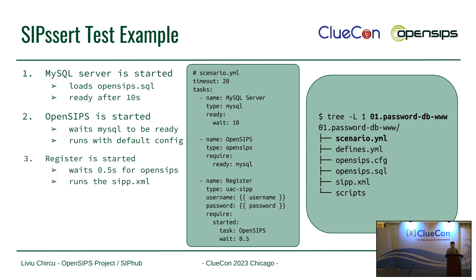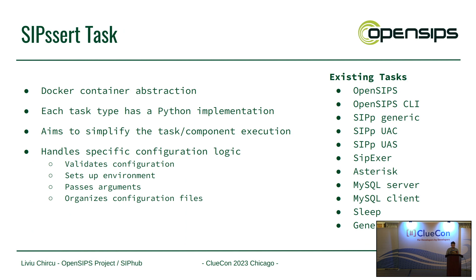Finally, there is the register - it waits half a second, runs the scenario, and finishes. We have this abstraction as tasks in SIPssert, which are nothing but predefined containers with their specific configuration. It can be a CP container, an Asterisk, or a FreeSwitch container. We also received a contribution with the SIPXer project, which is a traffic generator written by Daniel. So now SIPXer is in SIPssert as well, and you can set up tasks by generating traffic with SIPXer.